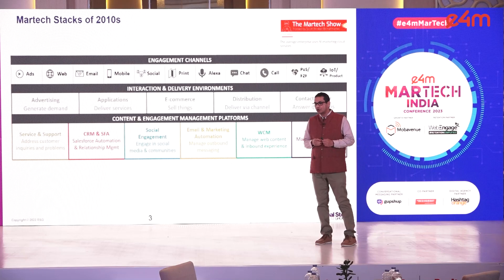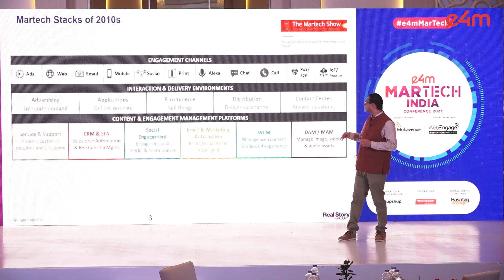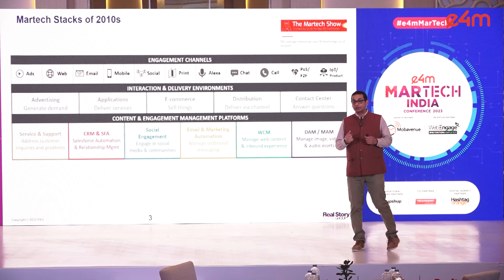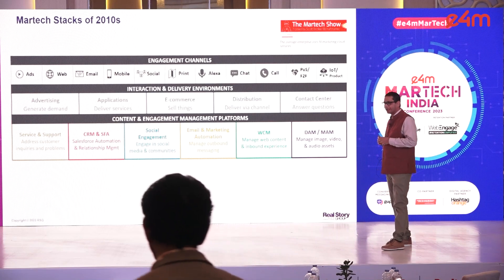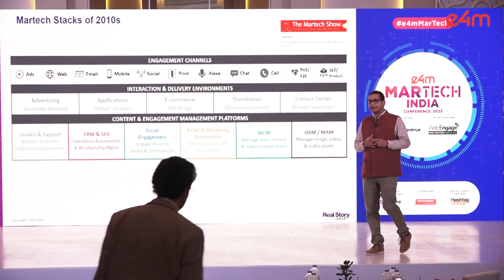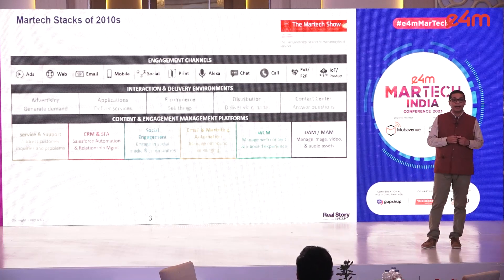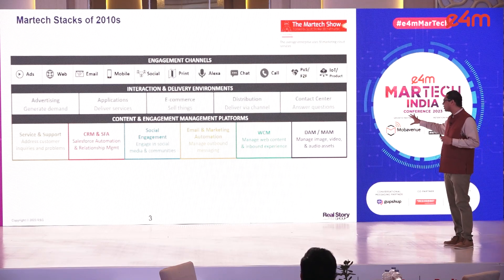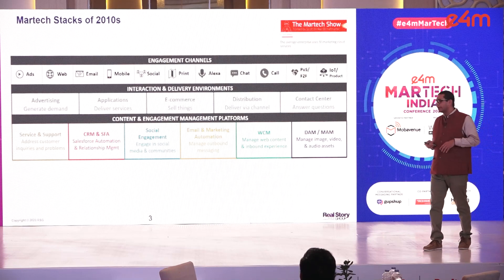This slide shows a stack that was quite popular in the last decade. You have engagement channels on top — the channels you use to interact with customers — then the interaction and delivery environments, and then the content and engagement management platforms. Statistics from Scott Brinker indicate that on average an enterprise has about 91 such systems. Every organization will have a different subset, but these kinds of stacks have been very popular.